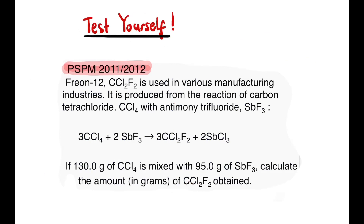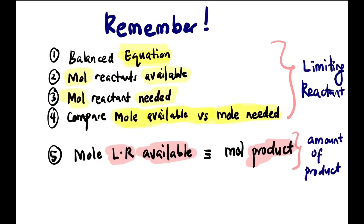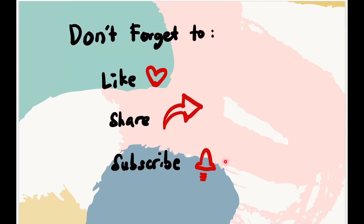You may test yourself with this past year question. Remember: to find the limiting reactant, you must first have the balanced equation, then find the moles of reactants available — if given mass, convert to moles. From the balanced equation, find moles needed, then compare moles available versus moles needed to decide the limiting reactant. To find the amount of product, use the moles of limiting reactant available. Even if the question doesn't ask for the limiting reactant, you still need to find it before determining the amount of product. If you like the video, don't forget to like, share, and subscribe.